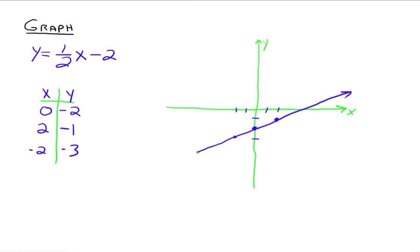What these lines represent are all the ordered pairs that make this given equation true. We can't list all of them because there are infinitely many, but we can find two or three points, connect the dots, and the line represents that infinite set of solutions. When we find the graph of an equation, we're finding the picture of all the ordered pairs that make that equation true.